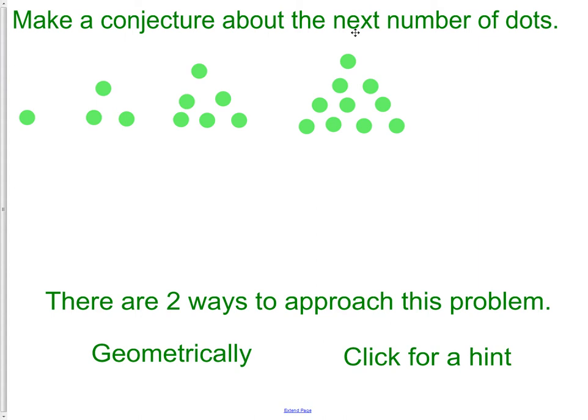Here there's a pile of one dot or shouldn't say a pile, just one dot. Next, we add a dot to the bottom and add one above it. Next, we add a row at the bottom and move the other ones up. We add another row at the bottom and move the other ones up. So using our conjecture, we would think that we would have one, two, three, four, five green dots on the bottom and then we would have four, three, two, and one above it.